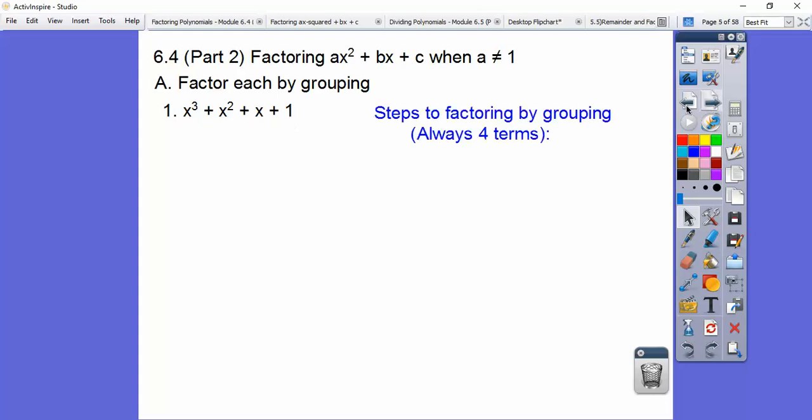So factoring by grouping, what we got to do is group them by the first two together and the second two together. And factoring by grouping is always with four terms, or most of the time.